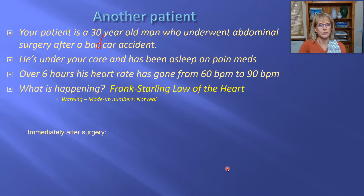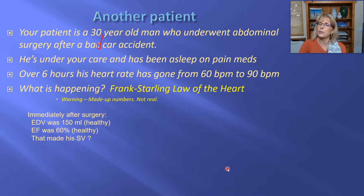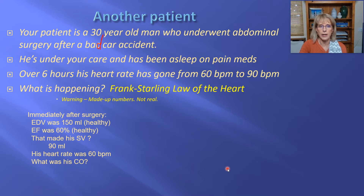Let's go over this man's statistics. Immediately after surgery, his end diastolic volume was 150 mL — that was healthy — and his ejection fraction was 60%, also healthy. His stroke volume is 90 mL per beat (150 mL × 0.60). At that time, his heart rate was 60 beats per minute, giving a cardiac output of 5,400 mL per minute.